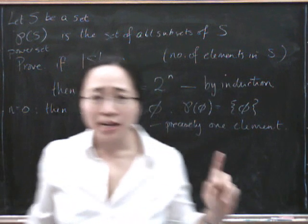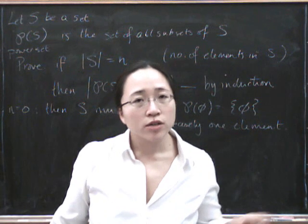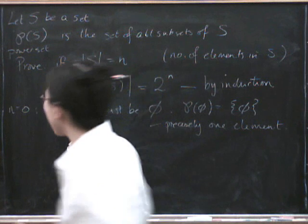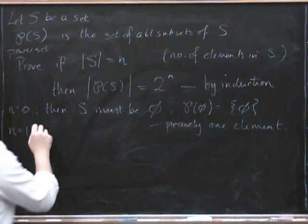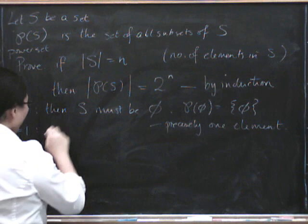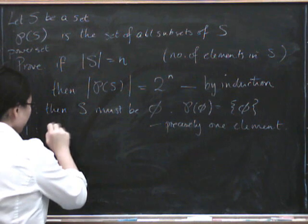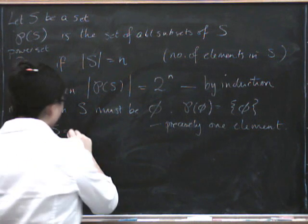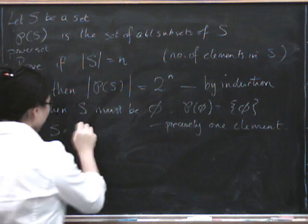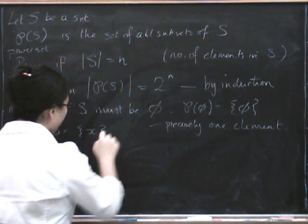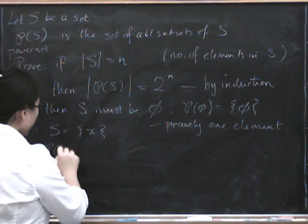If the example with the empty set confuses you, you can try doing just the set with one element. So you can look at n equals 1. If you have n equals 1, then S has only one element. S has one element. In which case, supposing that element is called x, then what are the possible subsets?